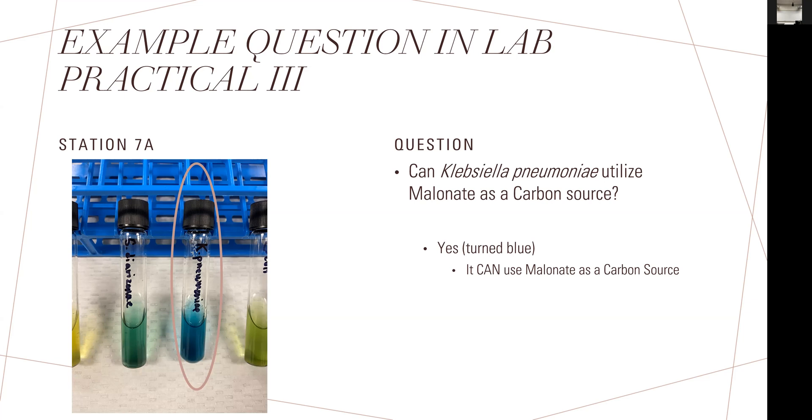We would have a question on that station saying, can this organism use malonate as a carbon source? The one I have circled is the one in question, Klebsiella pneumoniae. Your job would be to identify, does it use malonate or not? The answer here would be yes, because it's blue. The medium usually starts off green. If it turns blue, that's positive confirmation. If it turns yellow, it's also negative but uses glucose. If it remains greenish, nothing happened. By looking at the results and comparing the color, you'd be able to say this organism can use malonate as a carbon source.